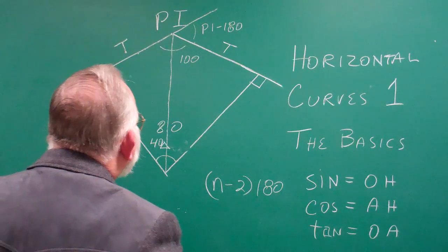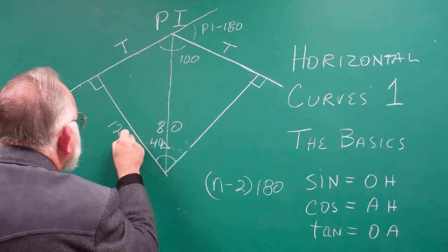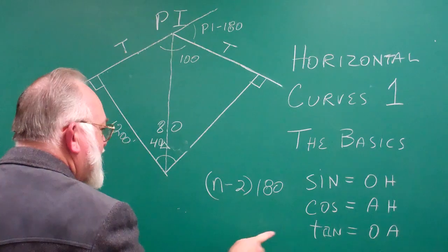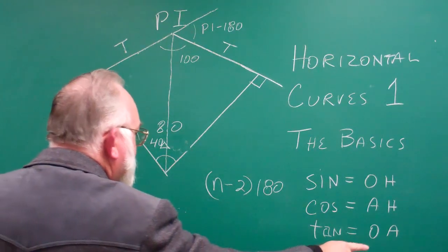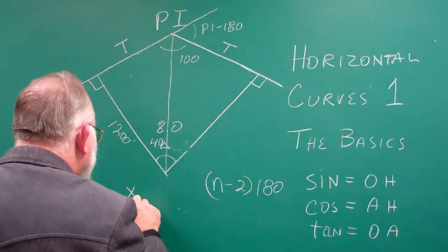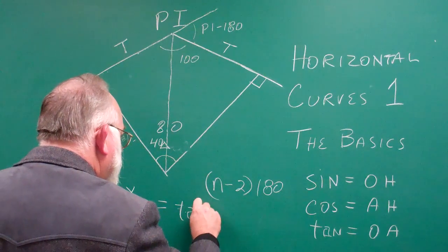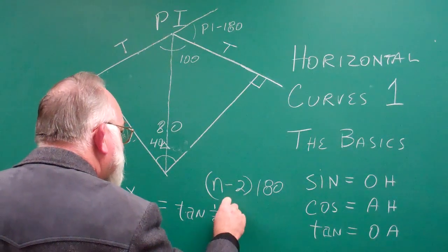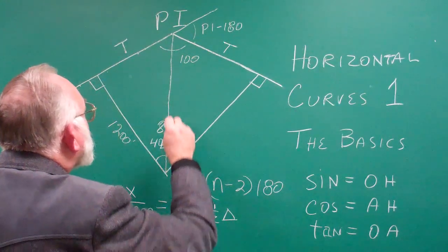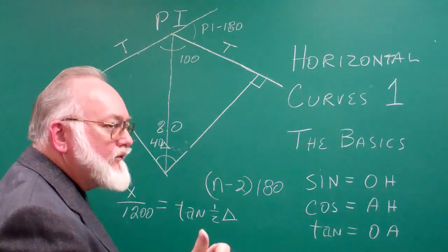So if you know that this is a 1,200 foot radius, then you know that the tangent of this angle is equal to the opposite over the adjacent. So x over 1,200 equals the tangent of half delta. That's your most basic computation.